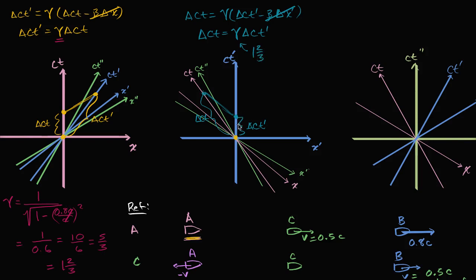This seems a little strange. In my frame of reference, two events at the same place but separated by time appear to take even longer in B's moving frame of reference. But then, if we have events that look stationary in B's frame of reference and are separated by change in ct-prime, the change in ct between those two events is even larger. It looks like a bizarre phenomenon.